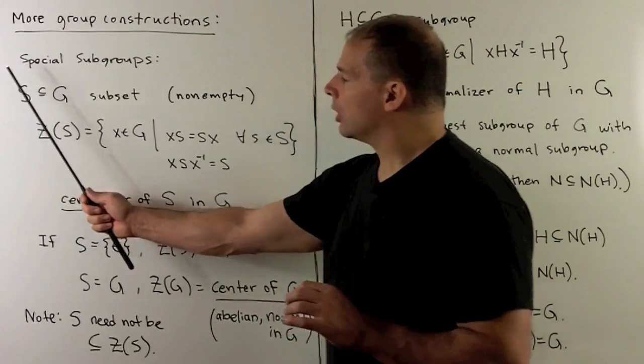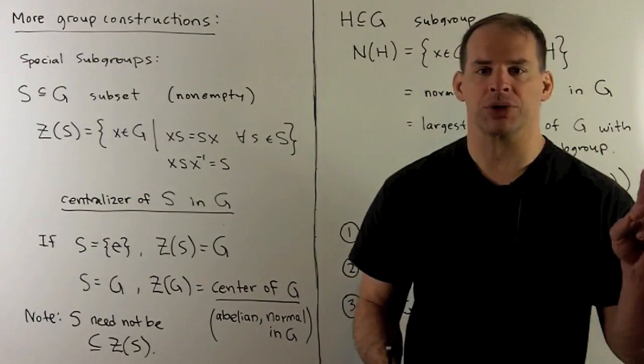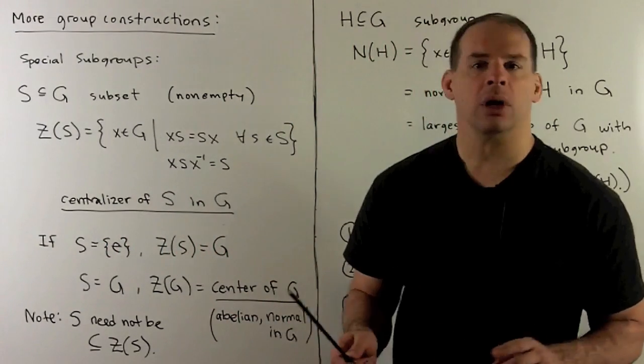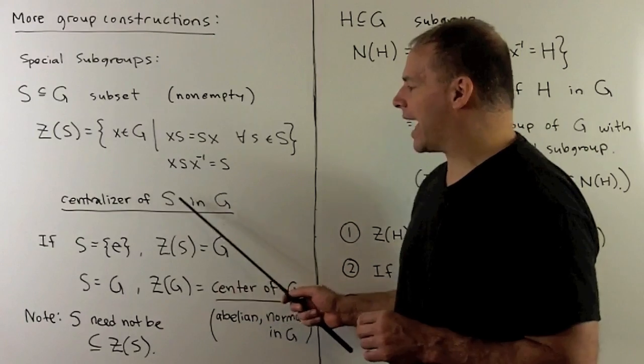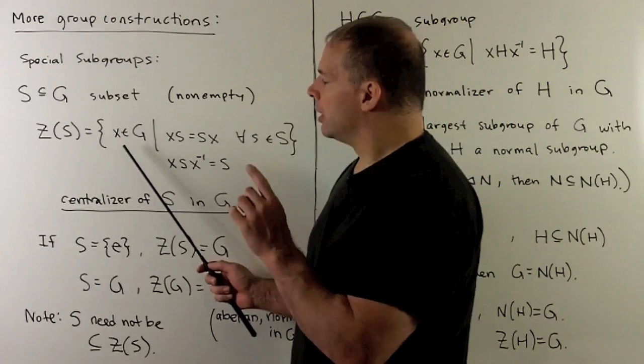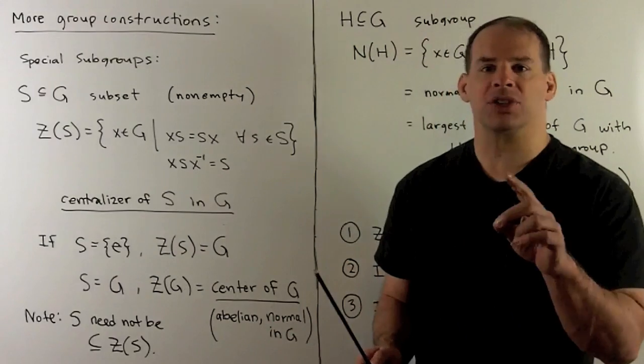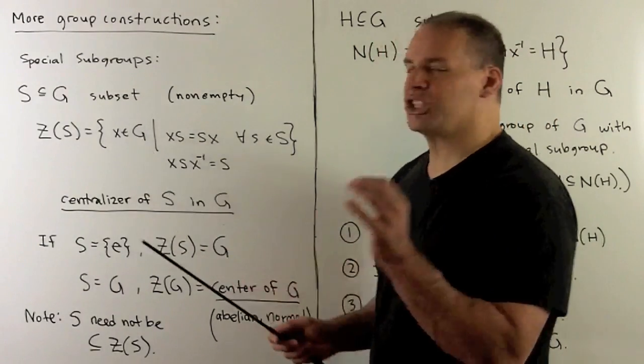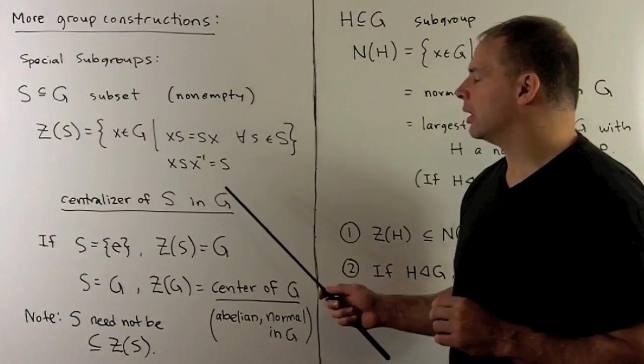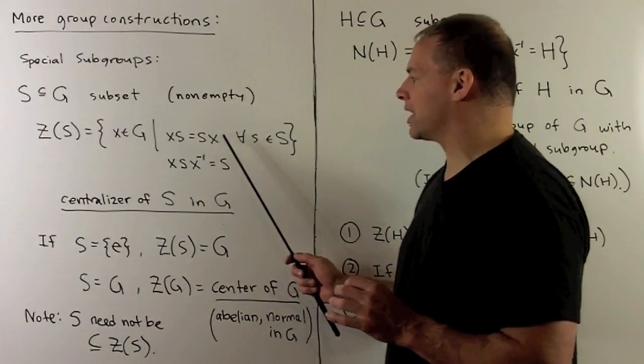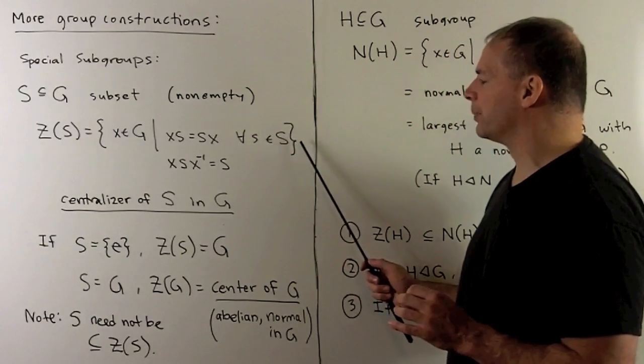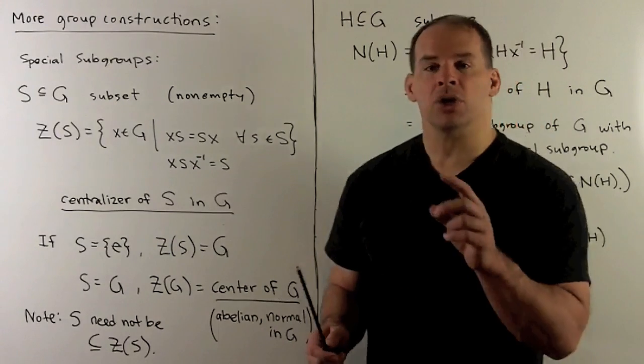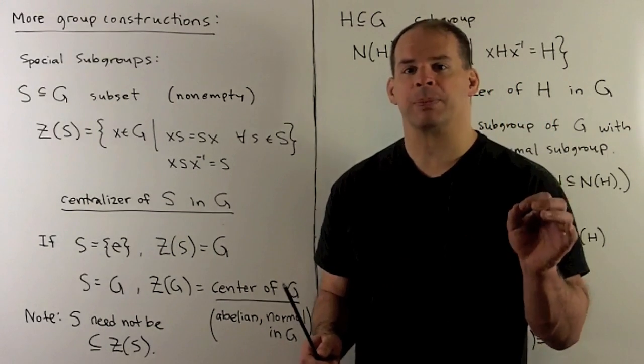We're going to identify some special subgroups. If I have S, some non-empty subset in G, I'll call the centralizer of S in G the subgroup that is the set of all X in our group such that X commutes with every element in S. We're saying that X centralizes S, so if we conjugate S by X, we get S back.